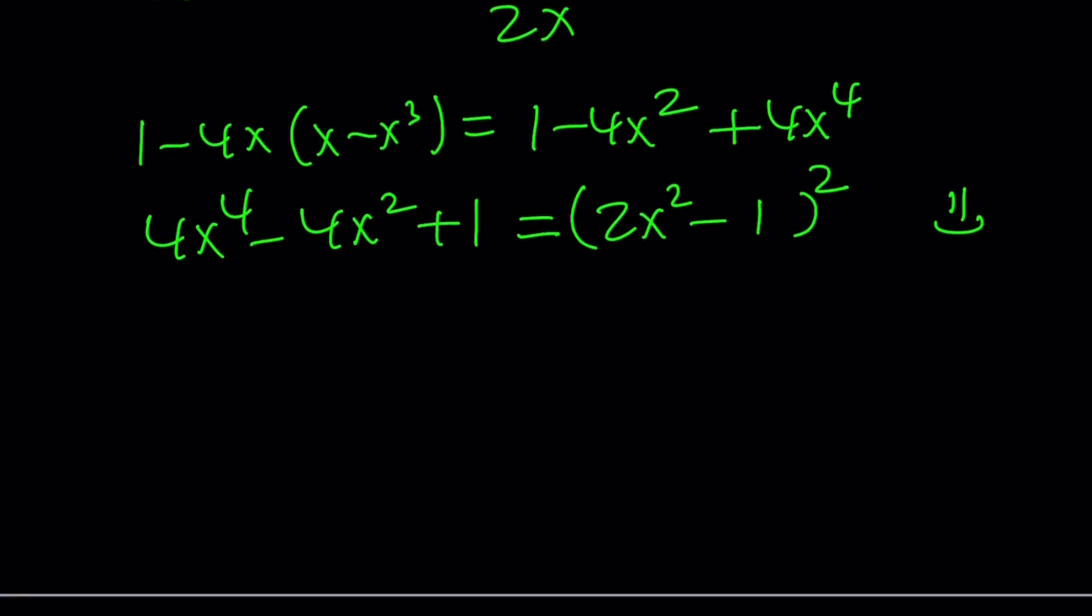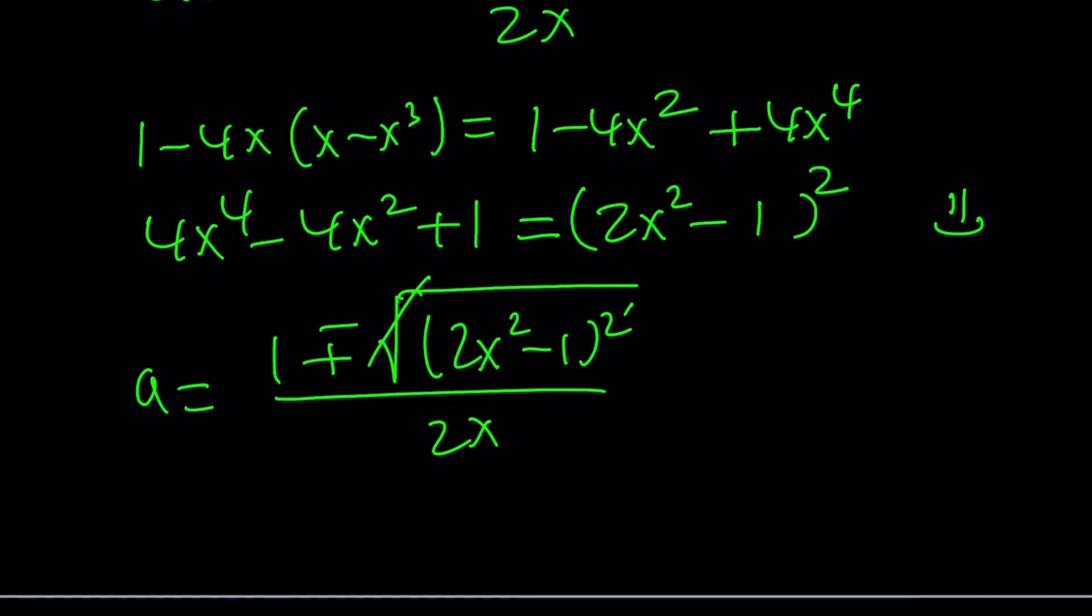So let's go ahead and plug it in. a can be written as now 1 plus minus the square root of (2x squared minus 1) quantity squared divided by 2x. Now since we have a perfect square inside the radical, we can go ahead and square root it. Square root and the square cancels out, but we have to use absolute value. But the plus minus will take care of that.